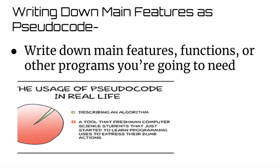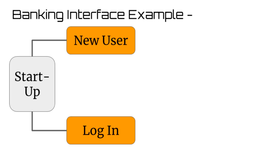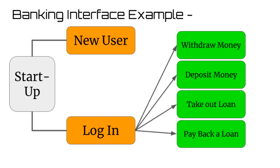The final pseudocode strategy I'd like to talk about today is writing out the main features you want the user to have when using your program, and what functions or smaller programs you're going to need to complete those features. For example, say you're making a banking interface, and you want the user to initially have two different options: they can set up a new account, or log into their existing account. From there, if they log into their account, then you want them to be able to withdraw money, deposit money, take out a loan, or pay back a loan.